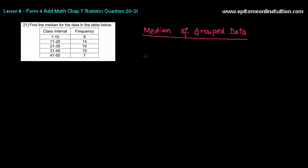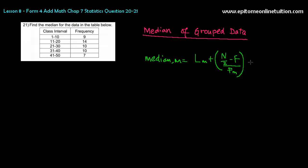And the formula is this. It is given to you, so don't worry. Median, or M, is equals to lower boundary of median class plus N over 2 minus big F over Fm times C.